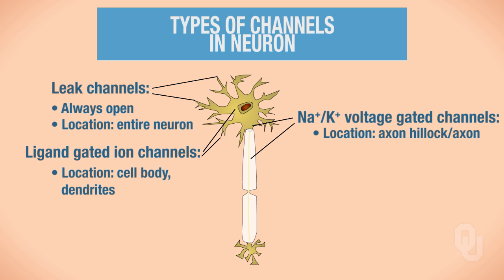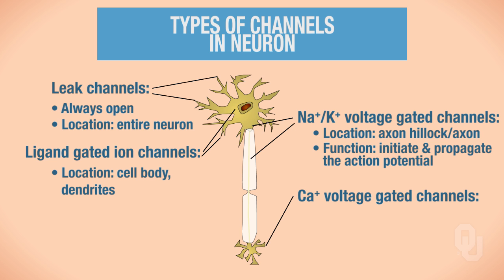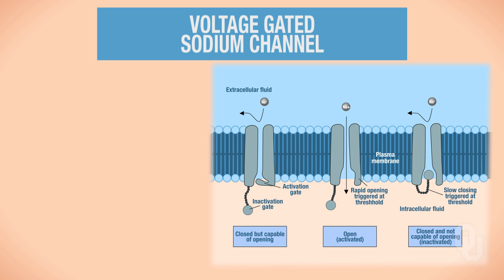The function of sodium and potassium voltage-gated channels is to initiate and propagate the action potential. We also have a third type of voltage-gated channel—calcium voltage-gated channels—located primarily at the axon terminal. When you study the synapse and events that occur at the synapse, you will learn about these voltage-gated channels and their activity there. Now let's focus first on the voltage-gated sodium channels, then return to the voltage-gated potassium channels.